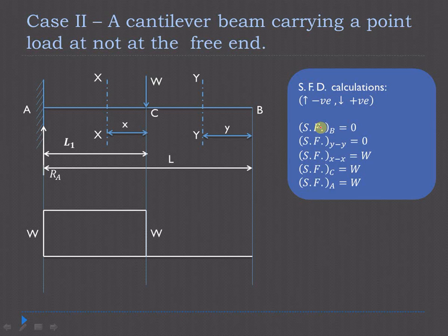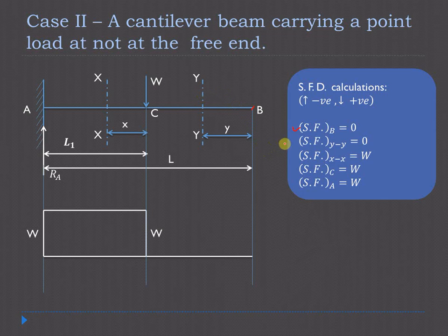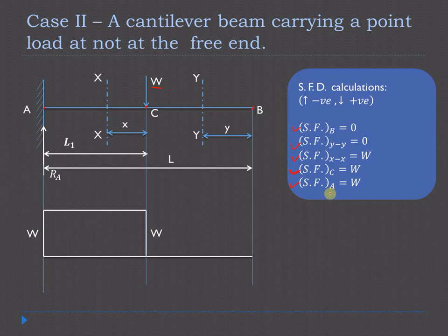Now let us consider the second case: the cantilever beam is carrying a point load, but the load is not acting at the free end — it is acting at a certain distance from the free end. There is no force at B, so shear force at B is 0. There is no force on the right-hand side of section YY, so shear force at YY is also 0. At section XX the force acting is W, so shear force at XX is W. Similarly at point C and at point A the shear force is W. So from C to A the force is W, whereas from B to C the force is 0.